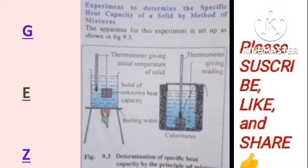Finally, the specific heat capacity of the solid can be calculated using the fact that the heat lost by the solid is equal to the heat gained by the water, the calorimeter, and the stirrer. This is a demonstration of the conservation of energy, because in the calorimeter we assume that heat loss to surroundings is very little and negligible.